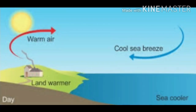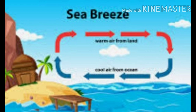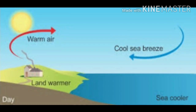During daytime, when the sun shines, the solid land gets heated to a higher temperature much more quickly than the sea water. The hot air over the land rises upwards and cooler air from over the sea moves towards the land in the form of a cool breeze. The breeze blowing from the sea towards the land is called sea breeze. The cool sea breeze blows only during the daytime, when the land is hotter than the sea. To receive the cool sea breeze during the day, the windows of houses in coastal areas are made to face the sea.